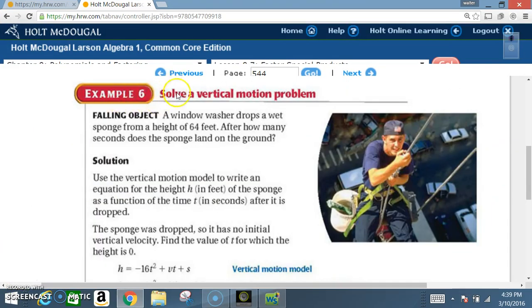Okay. Example six. Solve a vertical motion problem. Falling object. A window washer drops a wet sponge from a height of 64 feet. After how many seconds does the sponge land on the ground?